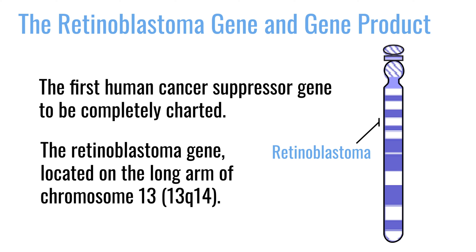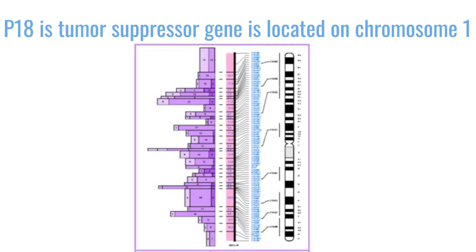Another important tumor suppressor gene in multiple myeloma is a gene on chromosome 1p called p18.